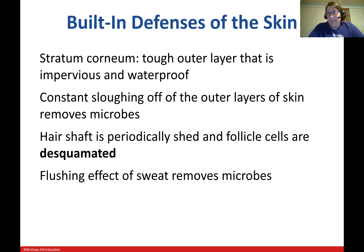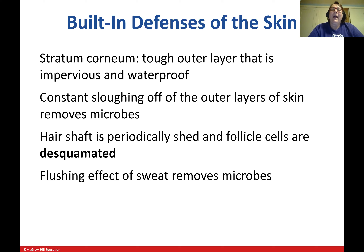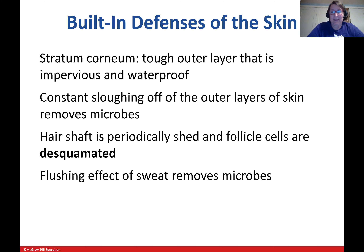Starting with the skin: intact skin is probably our biggest barrier. The stratum corneum is the tough outer layer that's impervious and waterproof — that's the very outside layer of skin cells. You can take a shower or use soap and it's not going to strip a whole lot of your skin off; a few dead skin cells may slough off, but you maintain your barrier. You have a constant sloughing off of the outer layers, with living cells underneath and dead cells forming the tough coating at the surface. The hair shaft is also periodically shed.